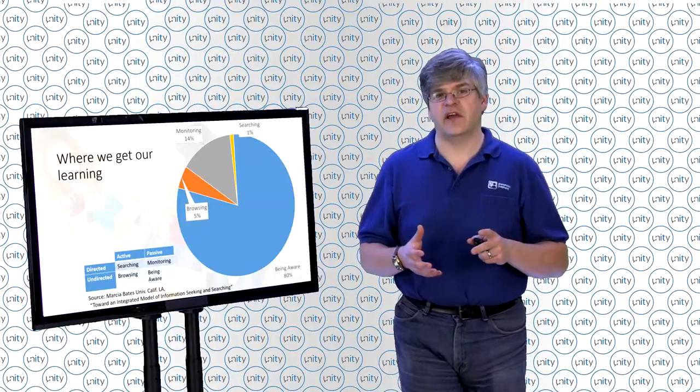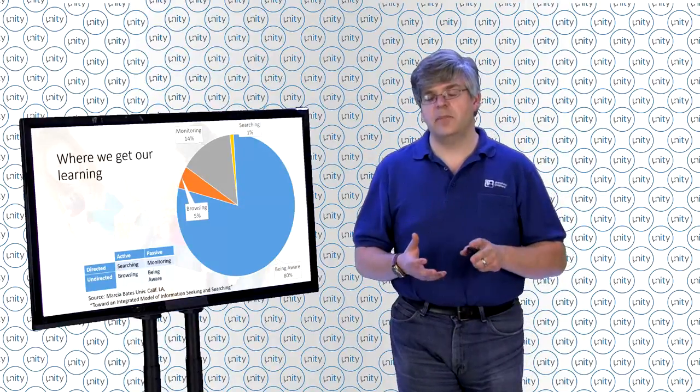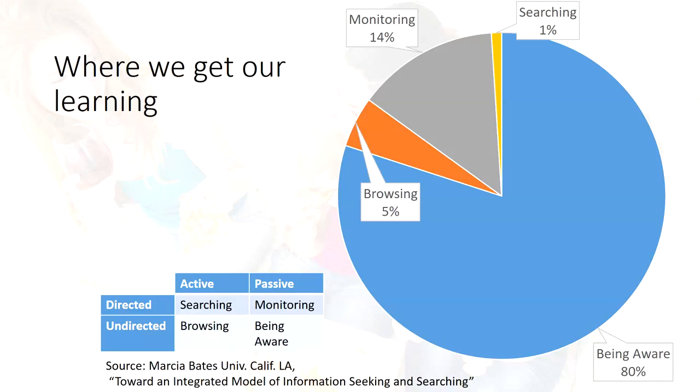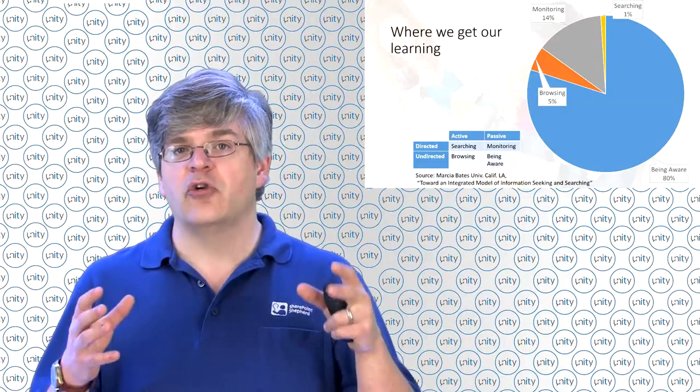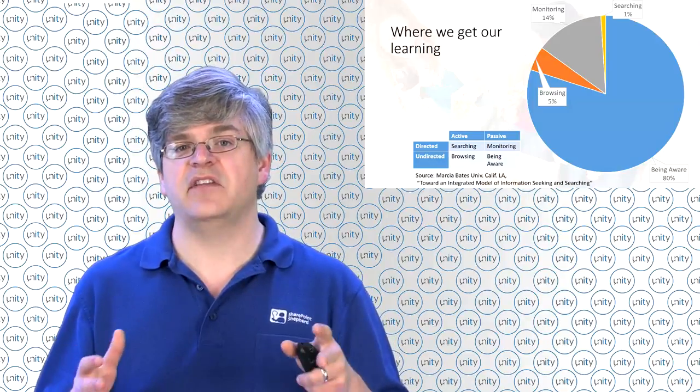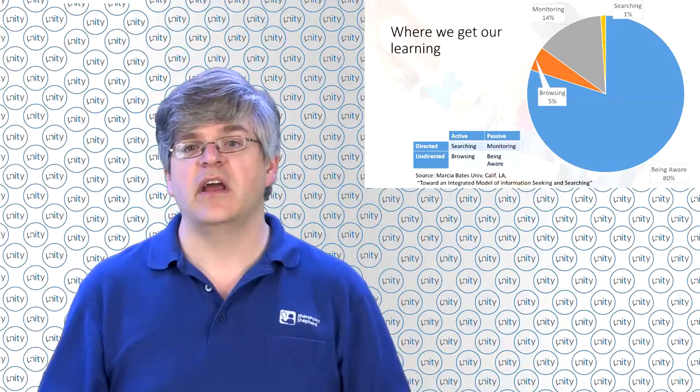I'm going to skip over to learning for a second and talk about the work of Marsha Bates. Now, Marsha Bates said that 80% of what we get in life, our knowledge, our experience, is all about being aware. We're not actively looking for something, and we're not directed in a topic. We're just becoming aware of things. That's about 80% of what we know. And so as we look at social technologies, our objective is not to figure out the 1% or the 5% as we're trying to find something specific, but rather to increase the overall pie by creating more opportunities for us to just be aware of things happening in the organization, of knowledge being developed, and of new ideas.